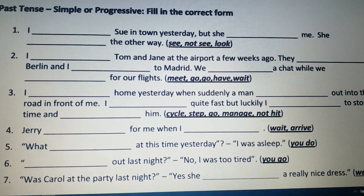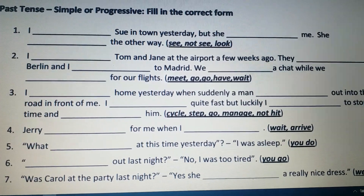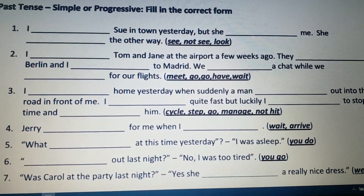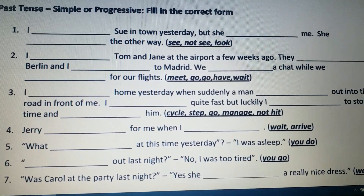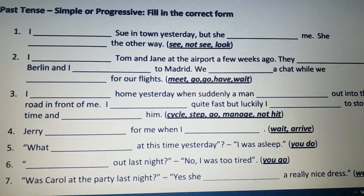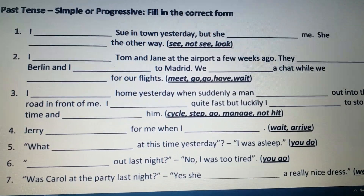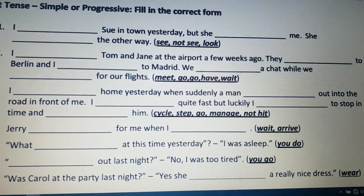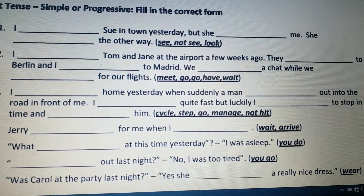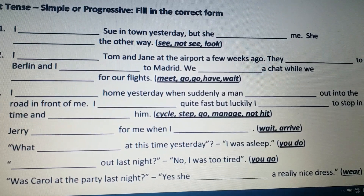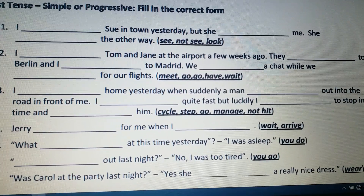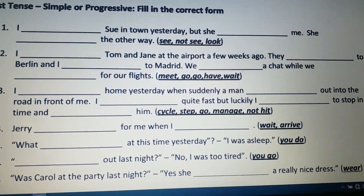Next: 'I ___ Tom and Jane at the airport a few weeks ago.' The verb is 'meet' and since the action got completed, we use simple past: the past form of 'meet' is 'met,' so: 'I met Tom and Jane at the airport a few weeks ago.' Next: 'They ___ to Berlin and I ___ to Madrid.' Both blanks use the verb 'go'; the second form is 'went': 'They went to Berlin and I went to Madrid.' Both actions are completed, so simple past only.